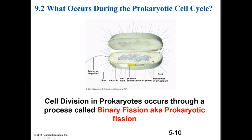Before we focus on eukaryotic cell division, let's focus on prokaryotic cell division. Cell division in prokaryotic cells occurs through a process called binary fission, also known as prokaryotic fission. Prokaryotic cells contain a single circular chromosome — a ring of DNA folded up in an area called a nucleoid. It is a thousand times the length of a cell. Prokaryotic cells typically have a single circular chromosome and they do not have a nucleus.